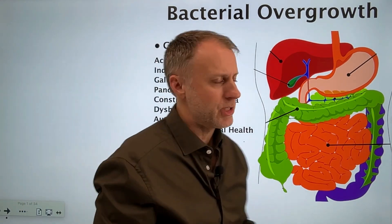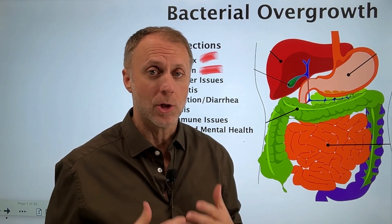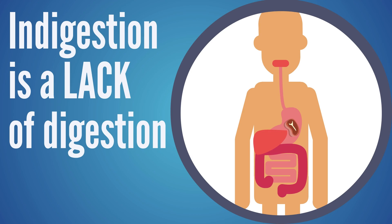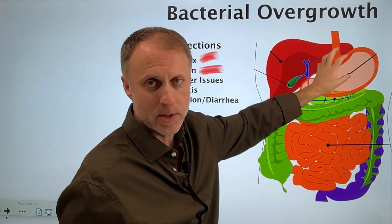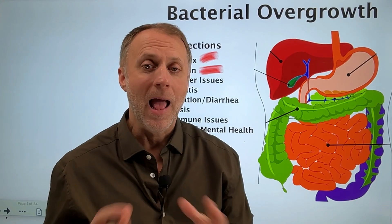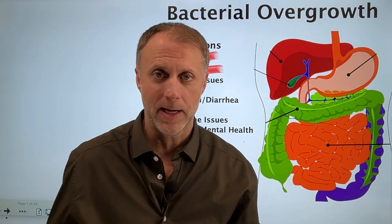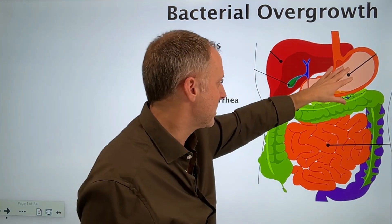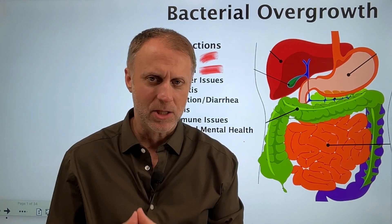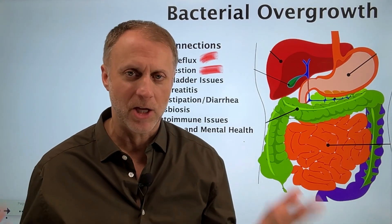Looking at indigestion — burping, bloating, cramping, nausea, and discomfort after eating — it's really a lack of digestion. That's usually a case where there's not enough stomach acid to acidify food. When food can't be acidified and broken down correctly, it breaks down by rotting and fermenting, creating gases and toxins. Those gases create pressure that pushes out on the intestinal tract — if in the stomach it creates bloating, if further down it creates cramping or nausea from all this undigested, toxic matter.